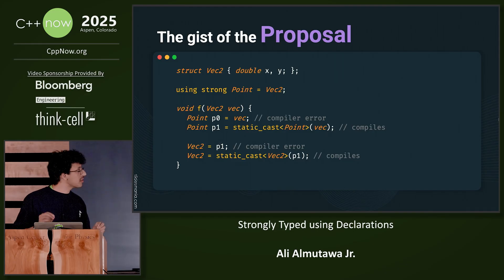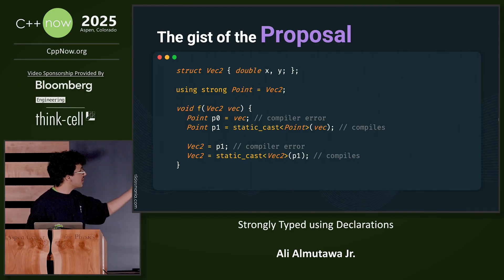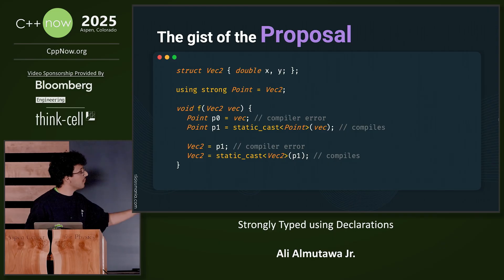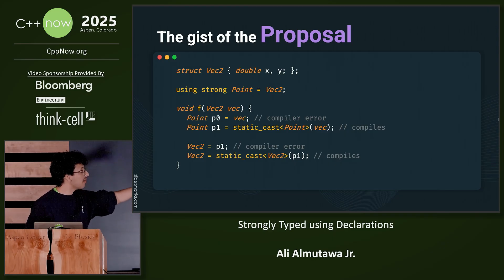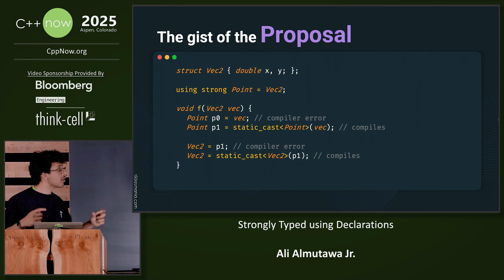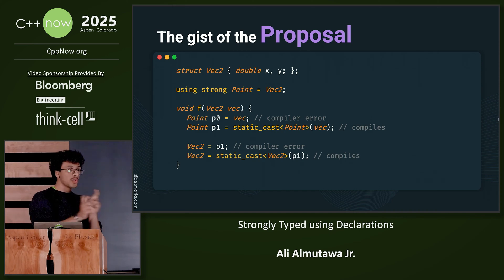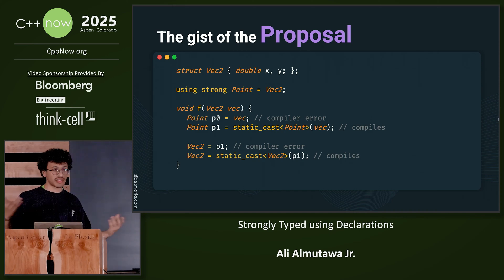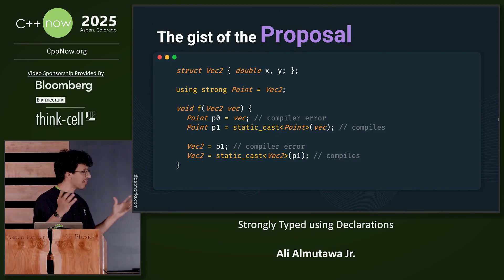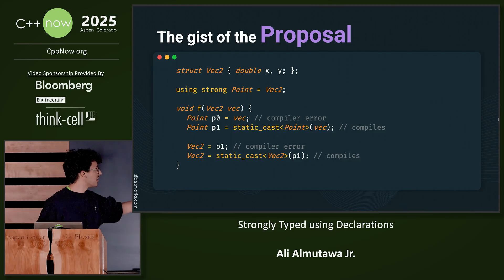Let's look at some of the gist of the proposals we're writing. We have the same vec2 class, using strong point. If you assign a vec2 into a point, that would be a compiler error. However, you can still statically cast between these two types, because at the end of the day they're still the same type — they're aliases, but strongly typed. Same thing going the other way.